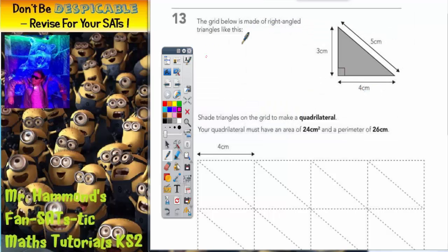Question 13. The grid below is made of right angle triangles like this, and it's a 3, 4, 5cm triangle. It says, shade triangles on the grid to make a quadrilateral. Your quadrilateral must have an area of 24 and a perimeter of 26.